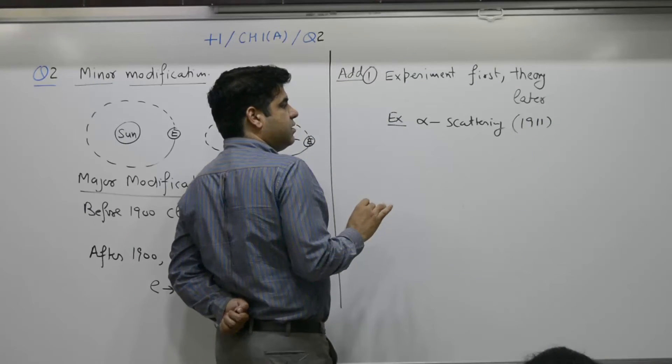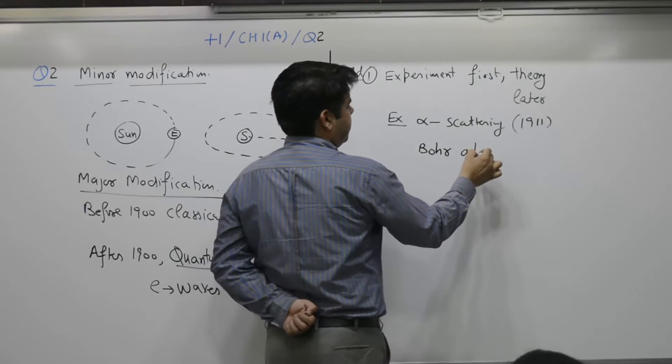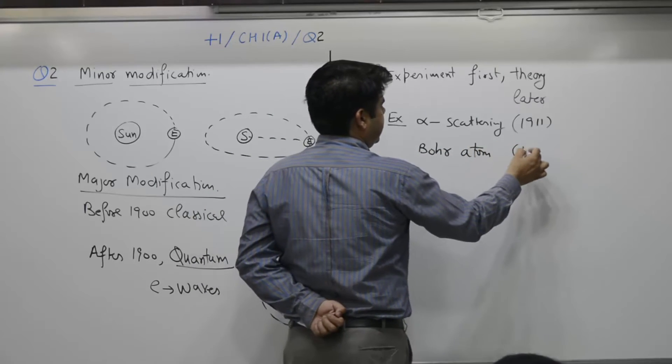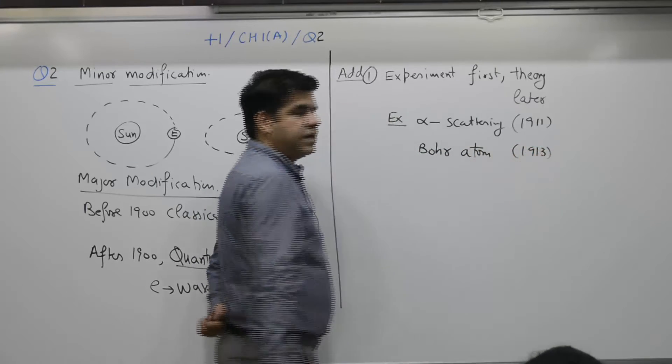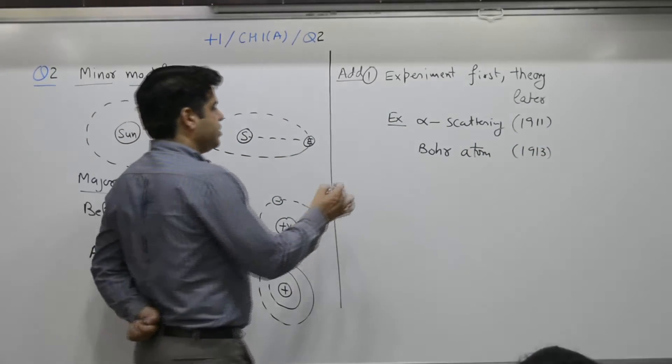And Bohr atom - spelling B-U-H-R atom - was explained in year 1913. So which came first? Experiment. Then what came? Theory.